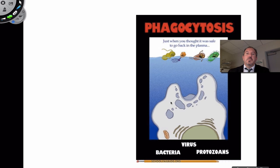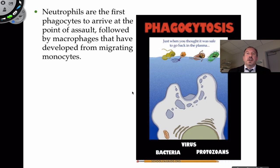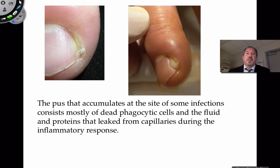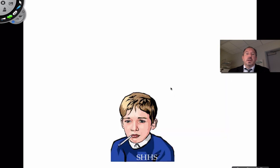Histamines and prostaglandins are really just trying to make vessels more permeable to allow more fluid and more white blood cells to come to the area so phagocytosis can occur. Neutrophils are fast and numerous and are usually the first to arrive on the scene, then monocytes follow. In addition to redness, swelling, pain, and heat, sometimes you'll see pus — which is the dead phagocytes in the fluid leaking out of the capillary along with tissue fluid proteins. It's a result, though somewhat gross, that things are working well in terms of the inflammation.